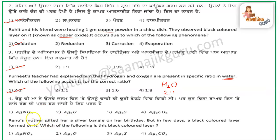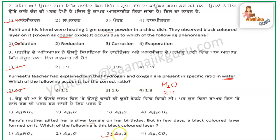The next question asks: which of the following is this black colored layer? It is silver sulphide, represented as Ag2S — we call it silver sulphide.